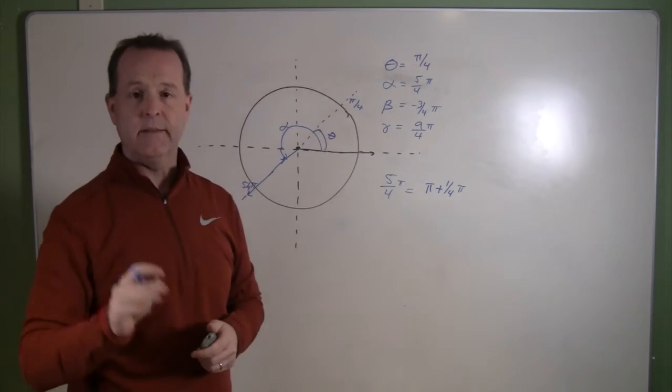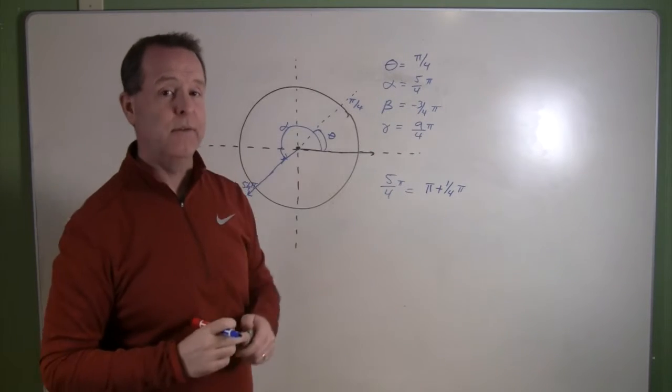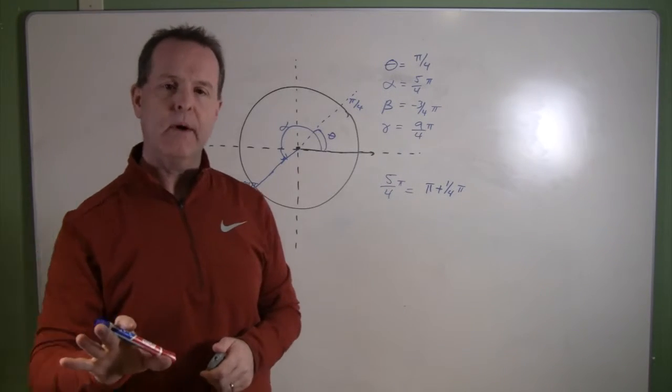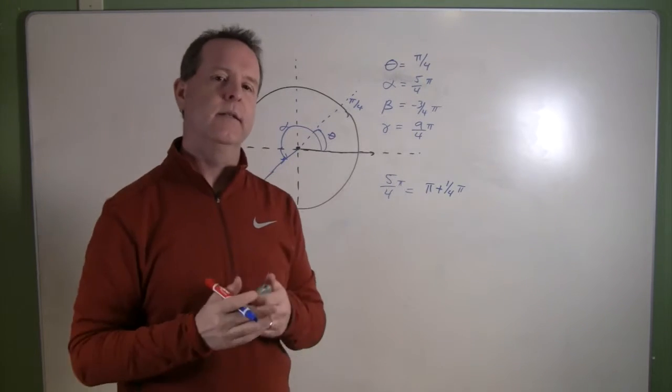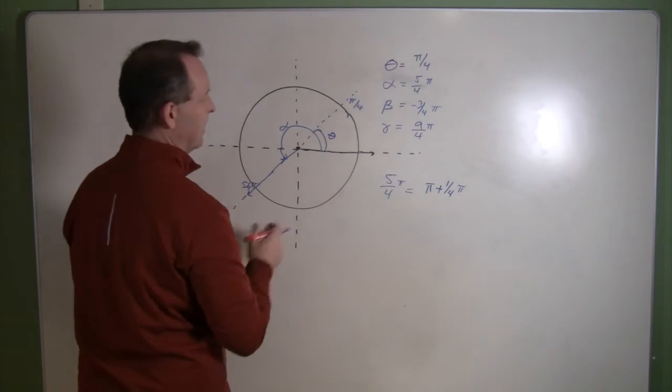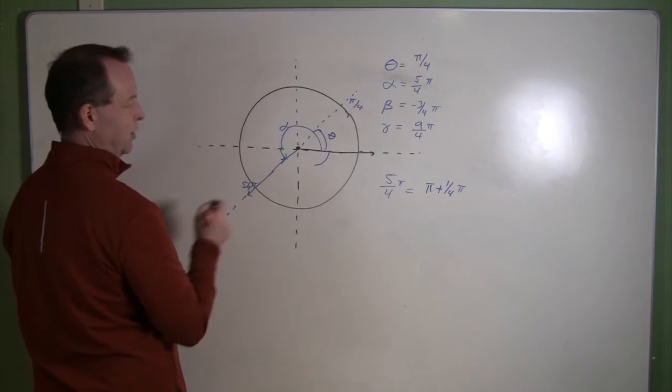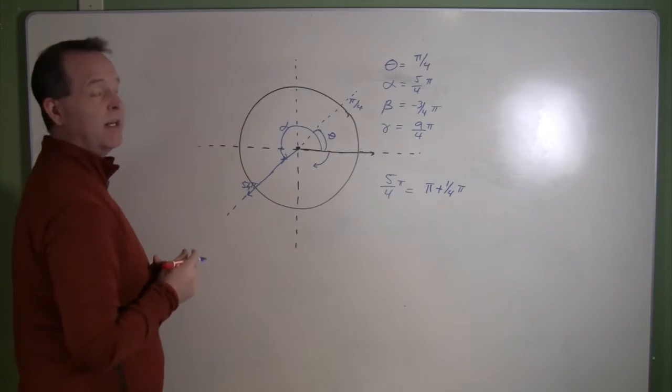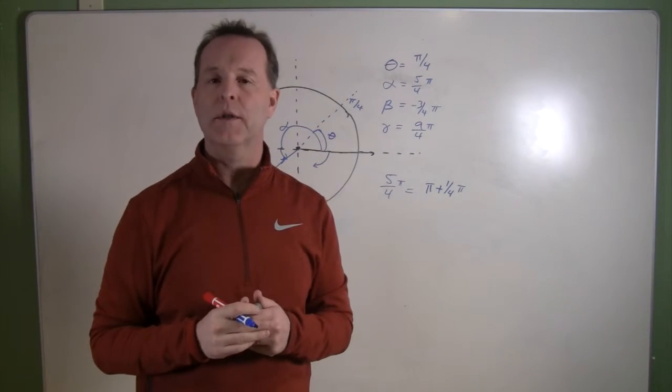The next one I have is beta. Now look at this one. This one's a little bit different. This one is negative three fourths. So we have to remember when we see a negative, that tells us to go clockwise rather than counterclockwise. So that means that we need to start here and then start traveling that direction. And we'll need to travel in a negative direction, three quarters pi.